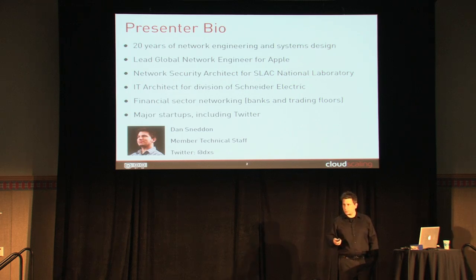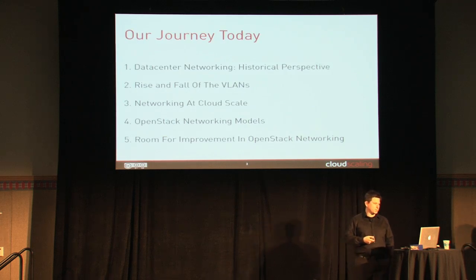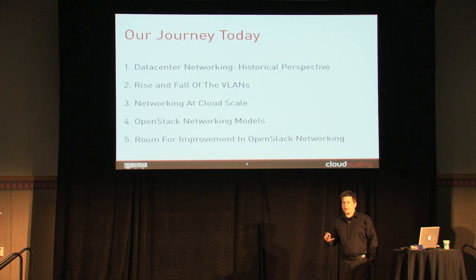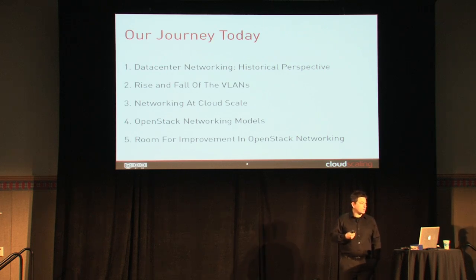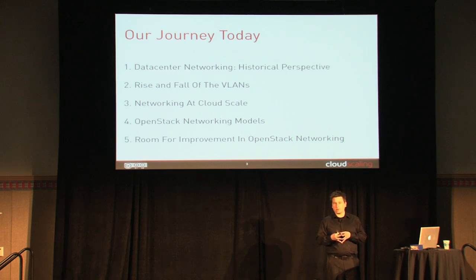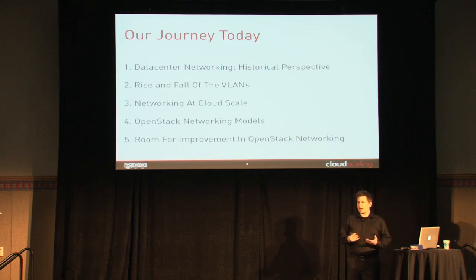I'm going to be presenting some strong opinions today from my experience, and I'm happy to take some challenge in the questions. Here's what we'll be talking about: a little bit of history on how data center networking came to be done the way it is today, how VLANs became ubiquitous and then fell by the wayside as scale increased, the challenges of networking at cloud scale, and the OpenStack networking model — formerly known as Quantum — including its gaps and room for improvement.